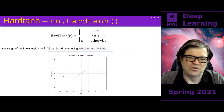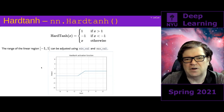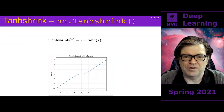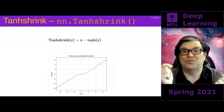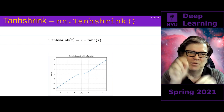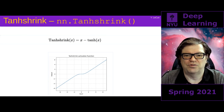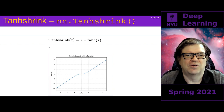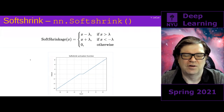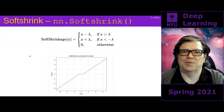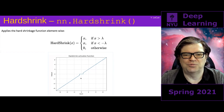Hard Tanh is really a saturating ramp — it goes between minus one and one and is linear in between, with two kinks, so it's not scaling-invariant. Then there are functions like tanh shrink, which is the difference between the identity and the hyperbolic tangent — a hard version of soft shrinkage. This is used in unsupervised learning and sparse coding in particular. Hard shrink you don't want to use with backprop because it's not even continuous.